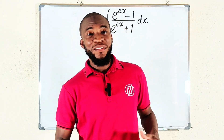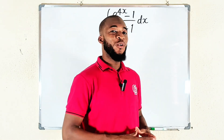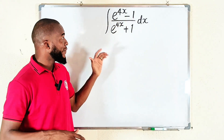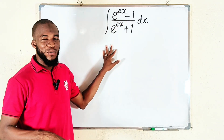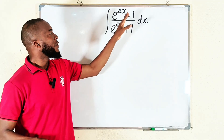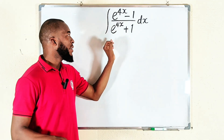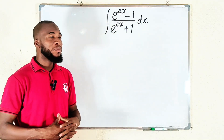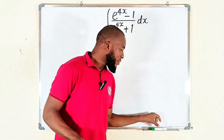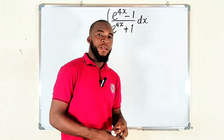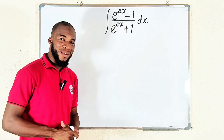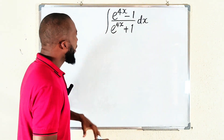Hello everyone. In this tutorial we are going to find the antiderivative of the exponential function (e^(4x) - 1) divided by (e^(4x) + 1) with respect to x. Don't forget to like, comment, and subscribe. Let's get started.